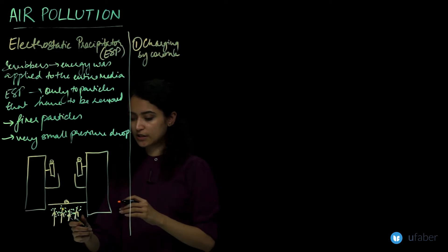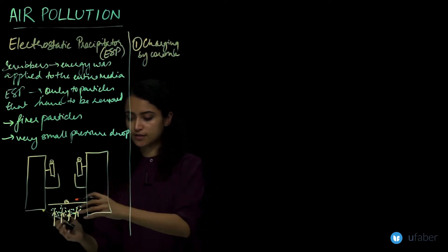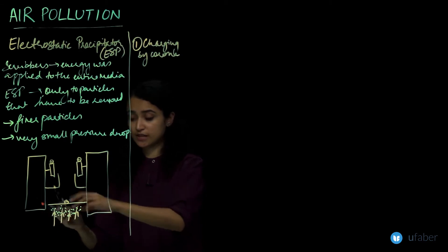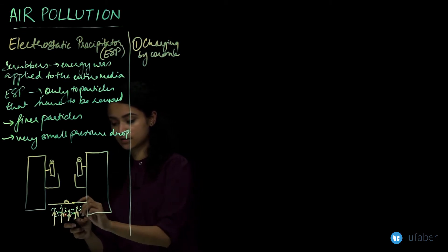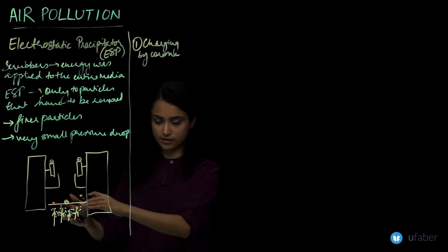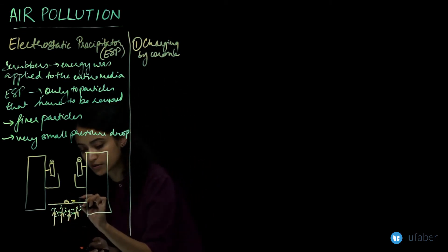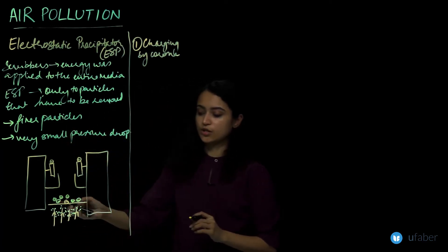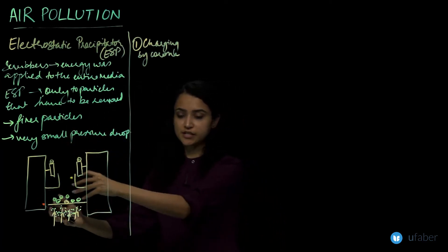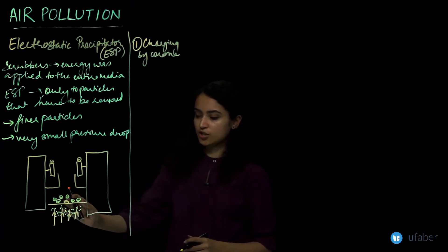What will happen is that when these particles - the corona discharge creates some ions and what is going to happen is these particles - this is a negative corona discharge that I've drawn here. So what is going to happen is all these particles will also have a negative charge when they come in contact, not in contact but in the field of this charging electrode.